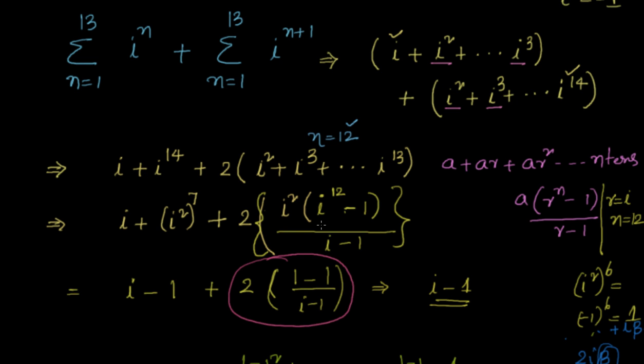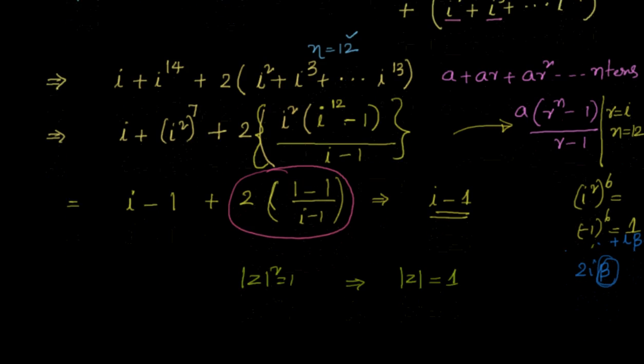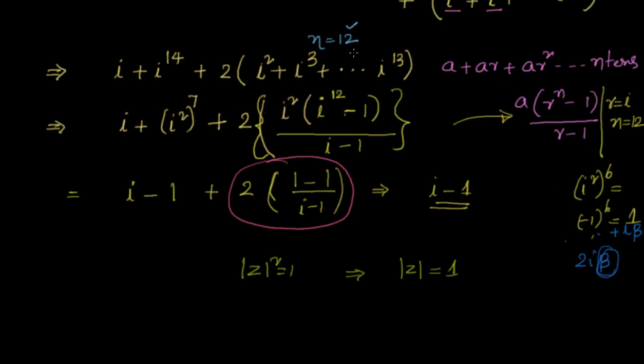Then we also see that they are in geometric progression. Why cannot apply the sum of n terms for a geometric progression? Because here a = i², r = i, and n = 12. We simplify that, we get this whole thing going into 0, becoming 0, and our solution is nothing but i - 1.